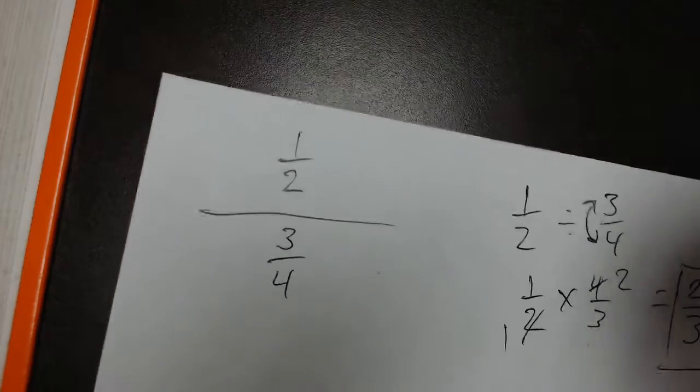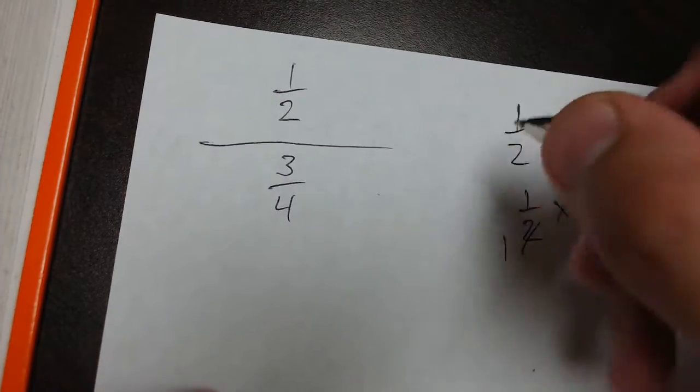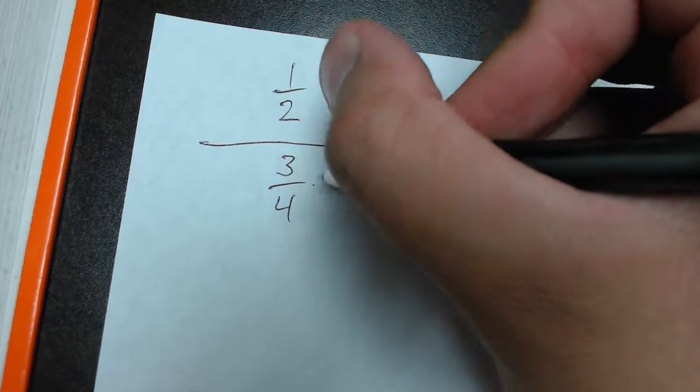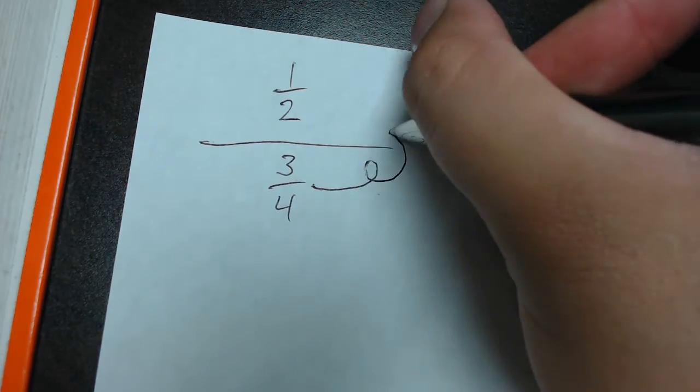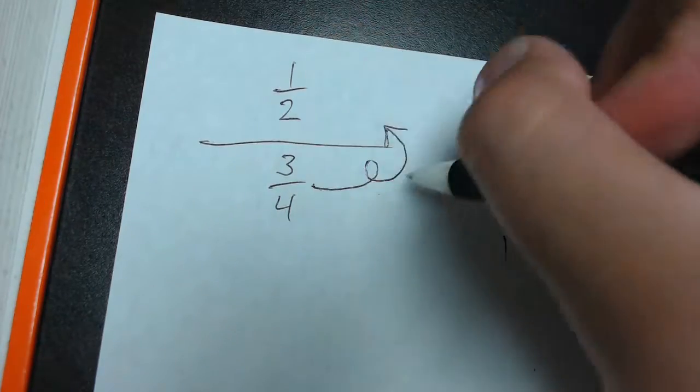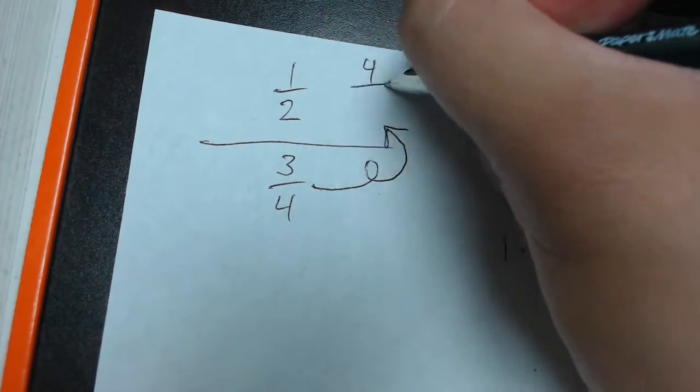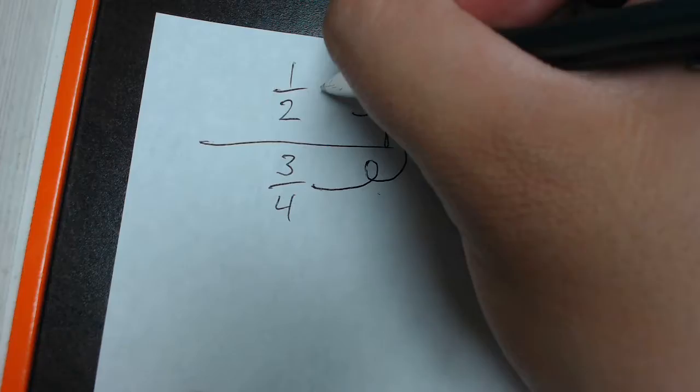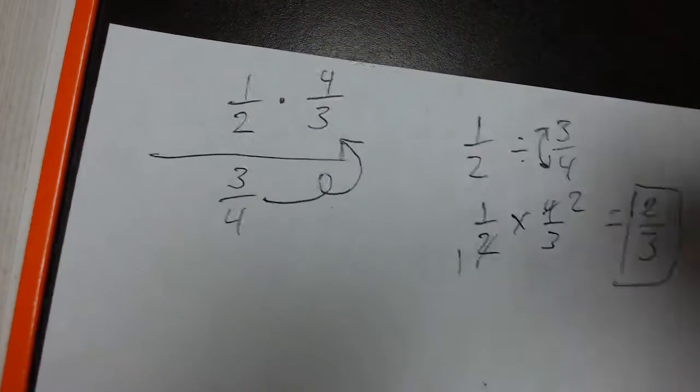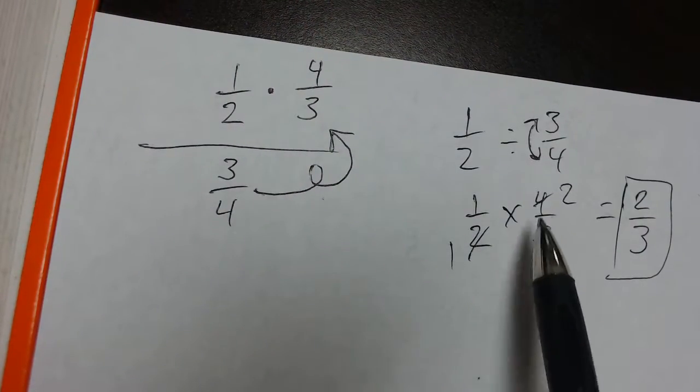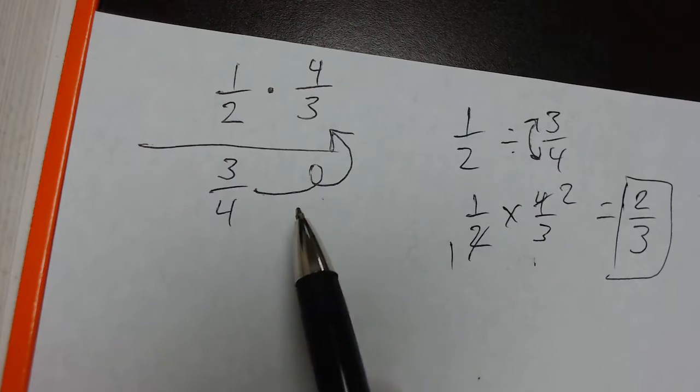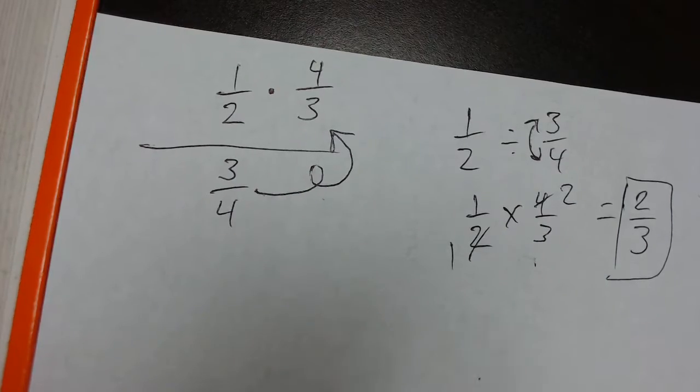Now the fast way to do that is when we're looking at these fractions is this funny little loop-de-loop that I like to draw, which is I take the denominator and I draw that loop-de-loop, which shows that I'm bringing it to the top and then I'm flipping it upside down at the same time. And then I multiply because that, in effect, does the exact same thing as all of this work over here. So if you can remember what that symbol means, you can go through these very quickly.